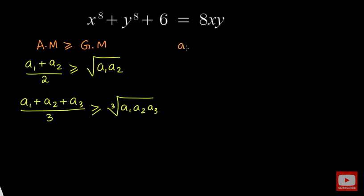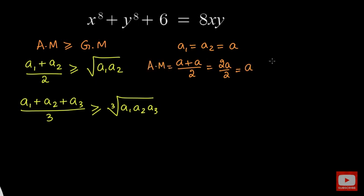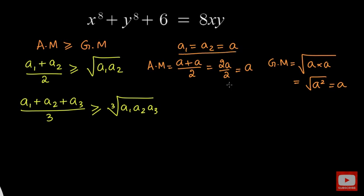Let us say the numbers a1 and a2 are equal to each other, say equal to a common number a. Then the arithmetic mean becomes a plus a over 2, which is 2a over 2, equal to a. And the geometric mean will be the square root of a times a, which is square root of a squared, equal to a. So when the numbers are equal, the arithmetic mean and the geometric mean are equal to each other.